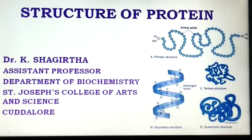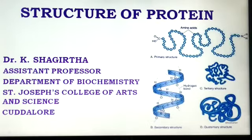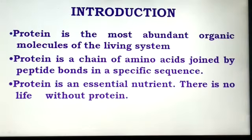There are three macronutrients present in our food: protein, fats, and carbohydrates. Macronutrients provide calories, and the body requires large amounts of macronutrients to sustain life. Each gram of protein contains four calories. Chemically, protein is composed of amino acids, which are organic compounds made of carbon, hydrogen, nitrogen, and oxygen. Amino acids are the building blocks of proteins — a chain of amino acids joined by peptide bonds in a specific sequence. It is an essential nutrient.